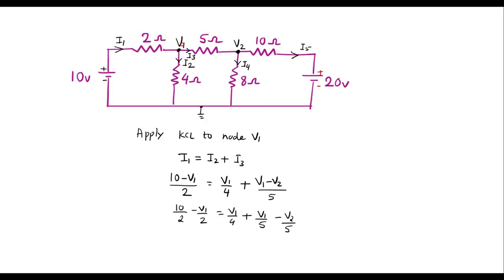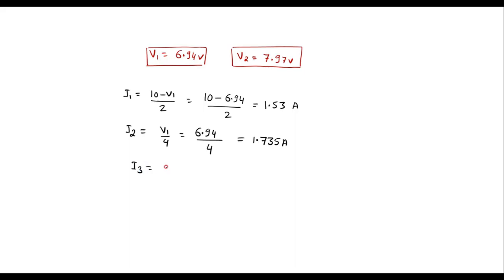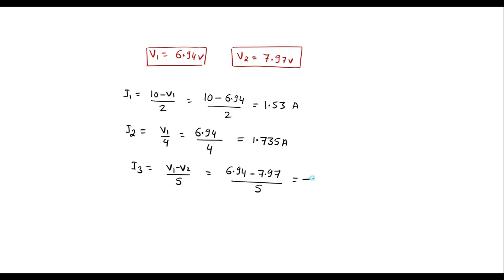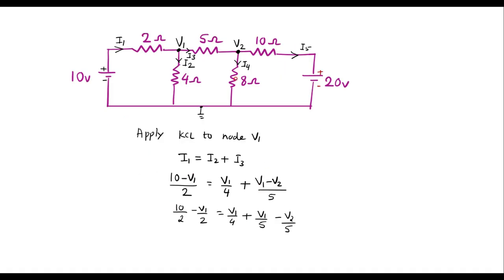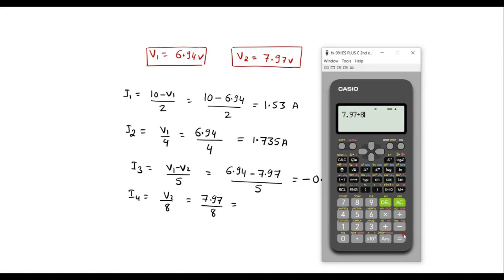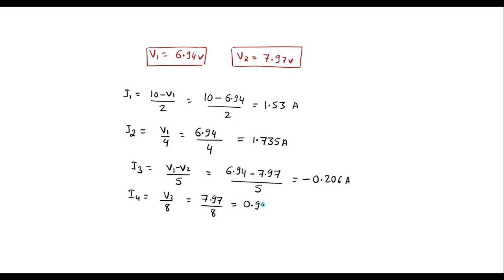I3 = (V1 − V2) / 5 = (6.94 − 7.97) / 5 = −1.03 / 5 = −0.206 A. The negative sign indicates current actually flows opposite to the assumed direction. I4 = V2 / 8 = 7.97 / 8 = 0.996 A.